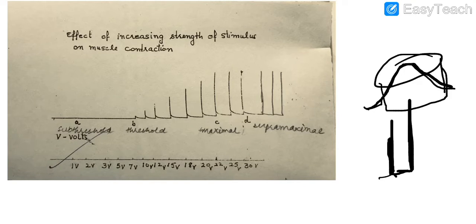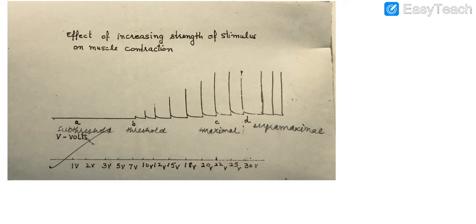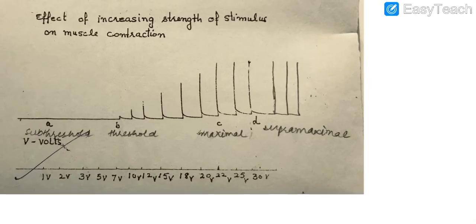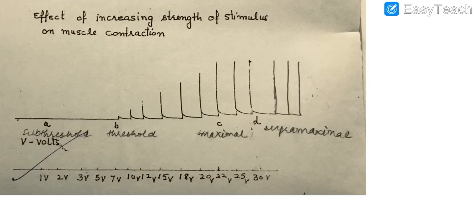The first thing to know about this graph is its name: this is the graph which shows the effect of increasing the strength of the stimulus on muscle contraction. If we look at this graph, initially we are providing the stimulus — the lowest line, the first marker, the second marker, the third, fourth, fifth — these markers indicate the point of application of the stimulus.